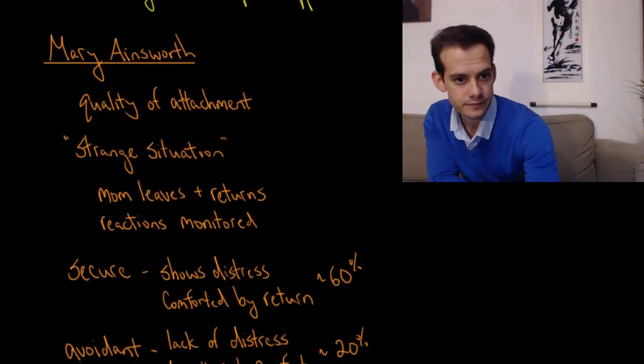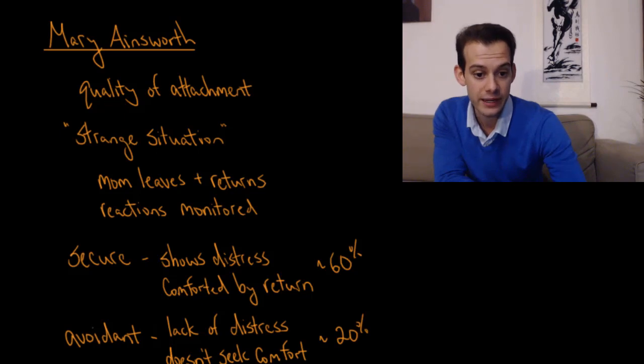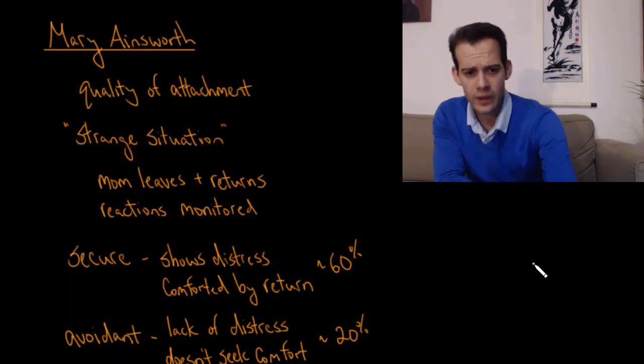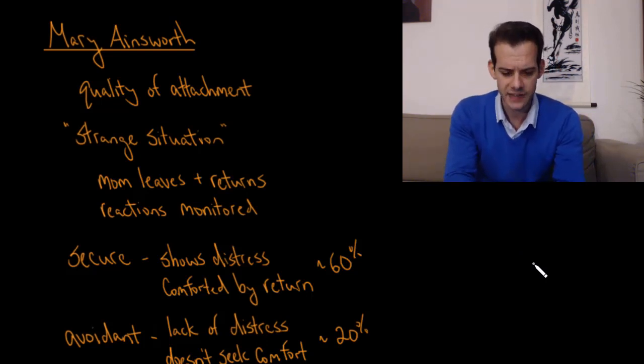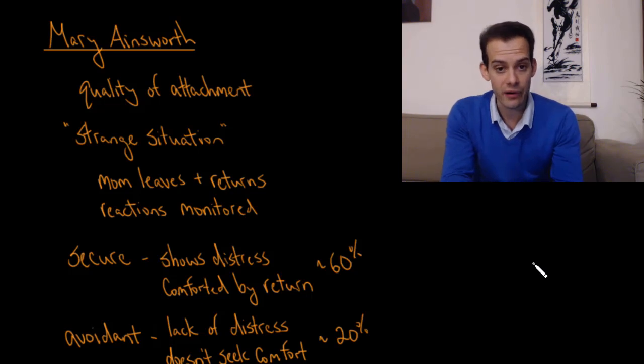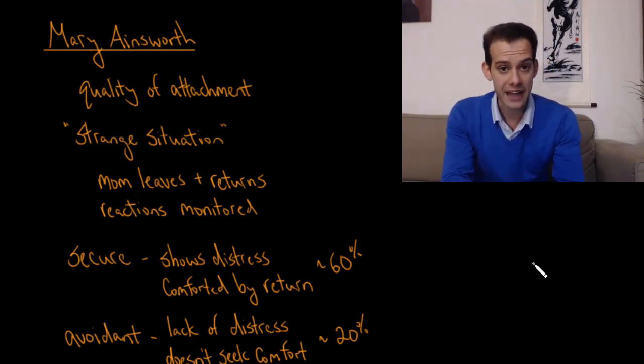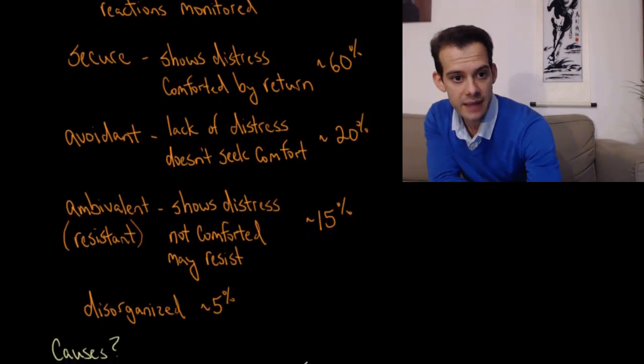This brings us to the work of Mary Ainsworth, who investigated the quality of attachment between the infant and the mother. The way that Ainsworth did this is through what's called the strange situation. This was a situation where the mother and child would come into the lab and go into a room where there are some toys. In the presence of the mother, the child could play with the toys. Then the mother would get up and leave the room. Sometimes there was a stranger in the room, sometimes the child was alone, but the mother would leave while the child was playing. The child was being observed through a mirror to see how they respond to this abandonment. After a few minutes, the mother would return and the reaction to this reunion would also be monitored. Ainsworth proposed that this reaction to the mother leaving and returning would tell us about the quality of attachment.